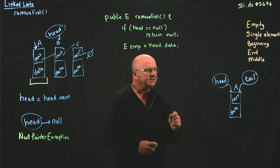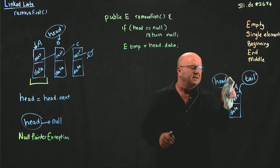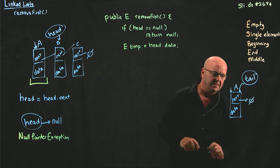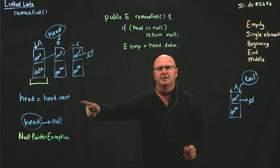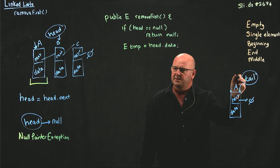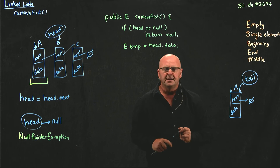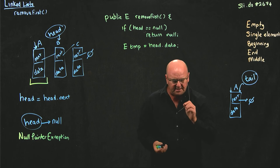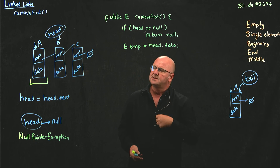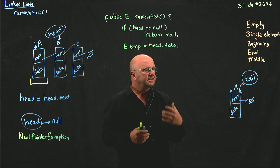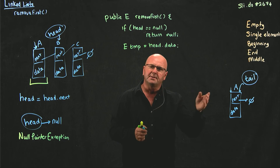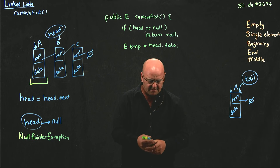So if we have a single element list and we delete the head pointer by making it point to head.next — which in this case is null — after we say head equals head.next, head is null. We also need to remember to update our tail pointer, and it has to point to null as well. So in the case where we have one element in a list, we need to update both head and tail. This is one of the gotchas about having a tail pointer — tail pointers give us constant time complexity to add to the end of the list, but they make it harder when we have a one-element list because we have to think about updating the tail pointer.